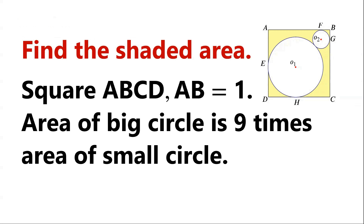Find the area of the shaded region. As shown in the diagram, two circles are inside a square ABCD of side length 1. One of the circles, centered at O1, is tangent to sides AD at E and DC at H. The other circle, centered at O2, is tangent to sides AB at F and BC at G. The circles are tangent to each other. The area of the larger circle is 9 times the area of the smaller circle. Note that the diagram is not to scale.